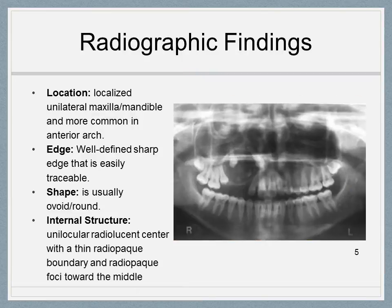Radiographic findings — using the lesion acronym: Location — located unilateral in the maxilla or mandible and more commonly in the anterior arch. Edge — well-defined, sharp edge that is easily traceable. Shape — usually ovoid to round. Internal Structure — unilocular radiolucent center with a thin radiopaque boundary and radiopaque foci toward the middle.